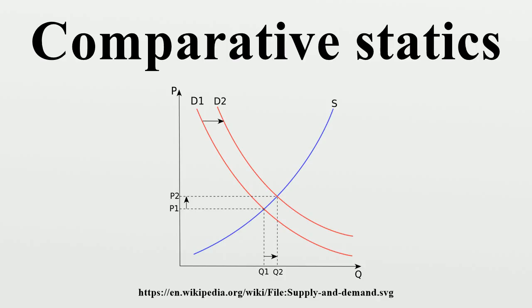Comparative statics asks how this maximizer changes in response to changes in the M parameters. The aim is to find. The strict concavity of the objective function implies that the Jacobian of F, which is exactly the matrix of second partial derivatives.